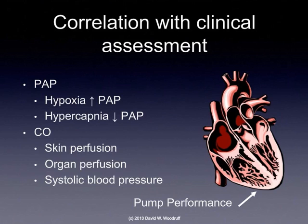We can also validate our cardiac output by looking at skin perfusion — skin color and temperature, and maybe capillary refill. We can look at organ perfusion, especially the organs that are very susceptible to changes in perfusion, like the brain and the kidneys. We can evaluate our systolic blood pressure. Systolic blood pressure is a good reflection of our cardiac output, whereas our diastolic blood pressure is a better reflection of the vasculature.